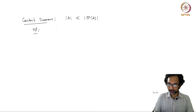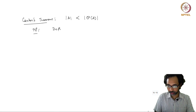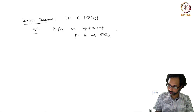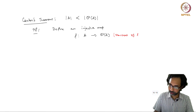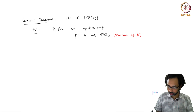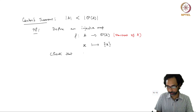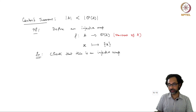It is easy to produce an injective map. We define a map f from A to the power set of A — the set of all subsets — which takes an element x in A to the singleton set {x}. One can easily check that this is an injective map; I will leave it as an exercise for you to verify.